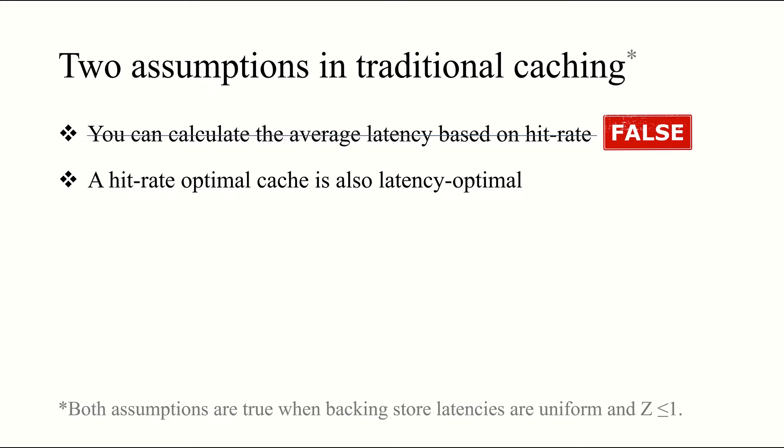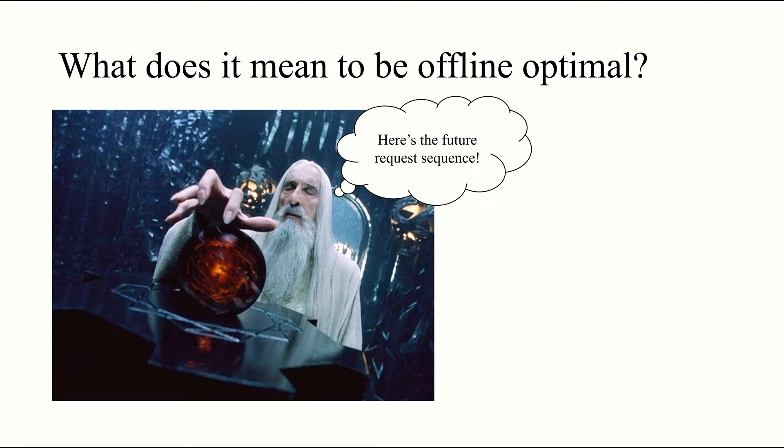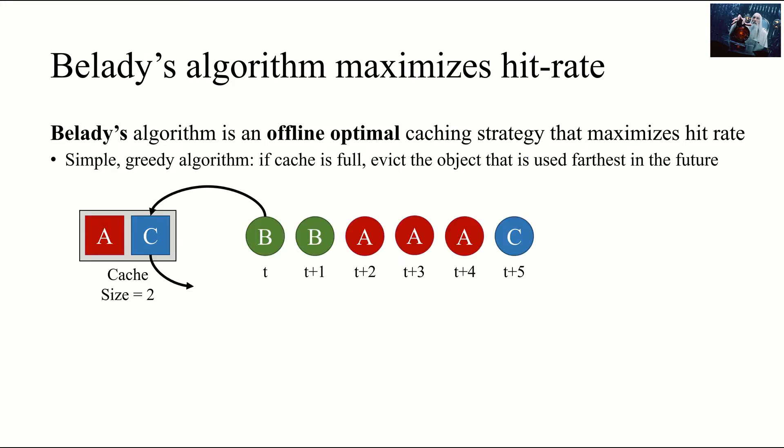Let's look at the second claim. A hit rate optimal cache is also latency optimal. So, what does it mean for an algorithm to be offline optimal? Well, if we had access to an oracle, in this case, a helpful wizard, who could tell us the future, then our algorithm, Belady's OPT, could use that information to produce an optimal solution. Belady's algorithm is one such offline optimal caching strategy. And it provably maximizes hit rate in the absence of delayed hits. We're in the offline setting, so we have access to our helpful wizard, who tells us the future. And Belady uses a simple, greedy strategy. If the cache is full, it evicts the object that is used farthest in the future. In this example, for a cache of size 2 containing objects A and C, Belady would choose to evict C, since it's used after both A and B.